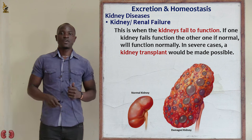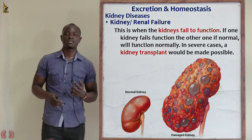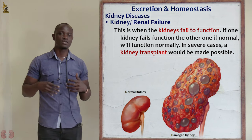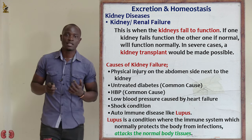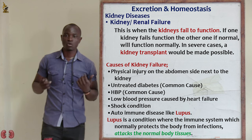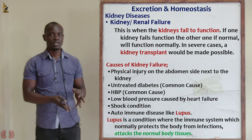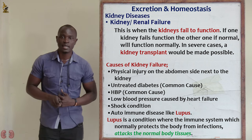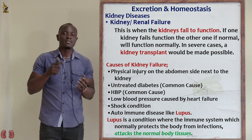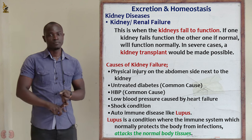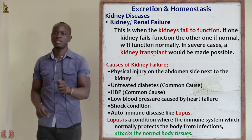The next disease is referred to as renal failure or kidney failure. Kidney failure is a disorder brought about when the kidney fails to function — if both kidneys or one kidney fails to function, this is mainly referred to as kidney failure. The first cause of kidney failure is physical injury. If the kidney has been injured physically, it won't function, leading to kidney failure. The next cause is untreated diabetes.